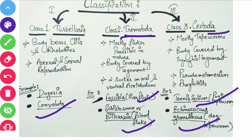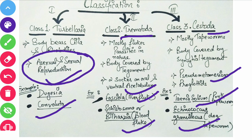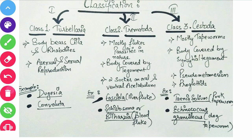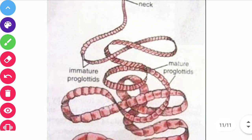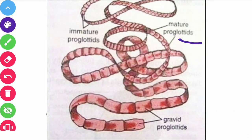In this phylum, proglottids and ventral acetabulum are notable features. Asexual and sexual reproduction is seen only in class Turbellaria. The other two classes — Trematoda and Cestoda — have only sexual reproduction. Pseudometamerism is seen in tapeworms: proglottids are present in their body, but the body is not completely divided into head, thorax, and abdomen — hence they show pseudometamerism.